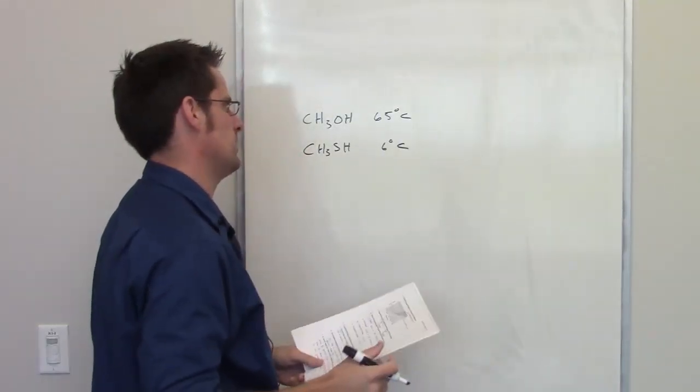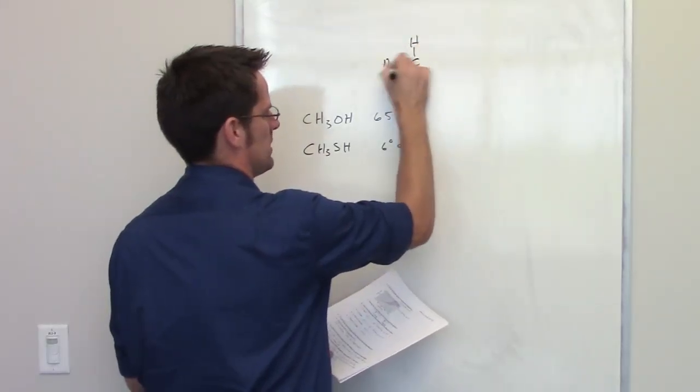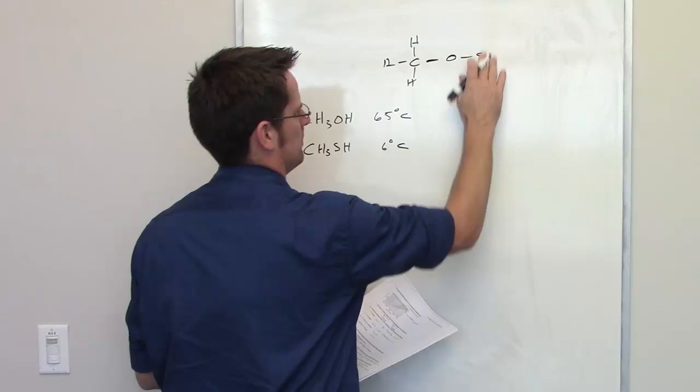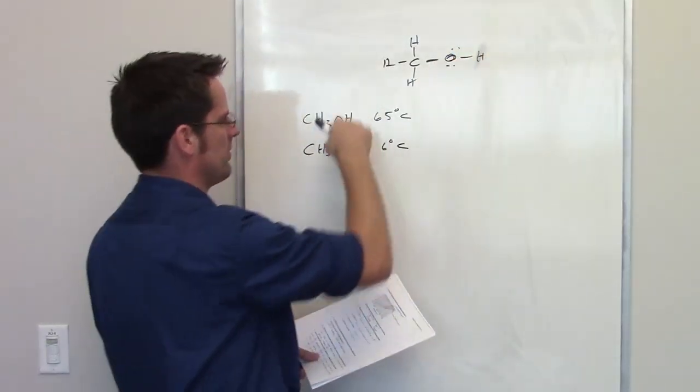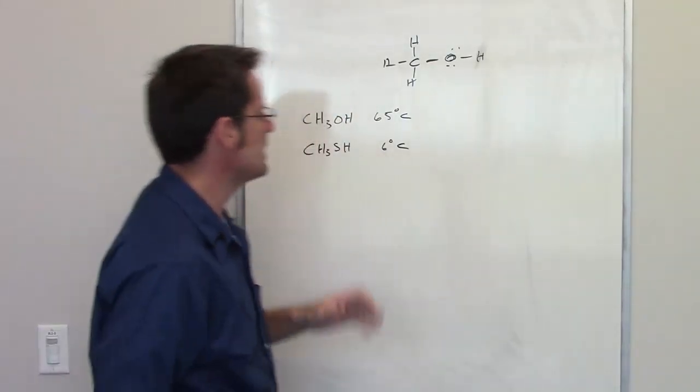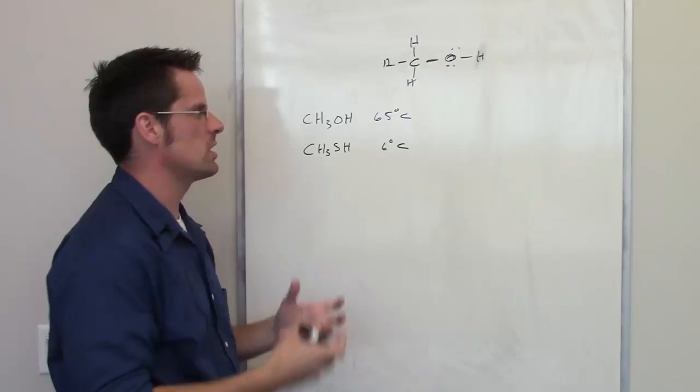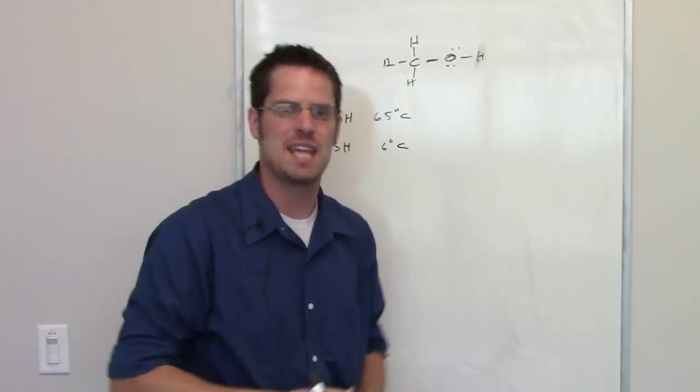What accounts for that difference? Well, hopefully you can see if you draw out the Lewis structures for these molecules that the only difference really is substituting an oxygen for a sulfur going from one to the other. And yet, that one subtle difference makes a tremendous difference in terms of what temperature you have to heat this up to to get it to convert from a liquid to a gas.